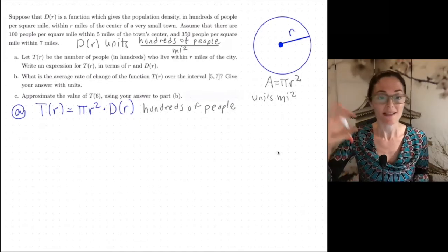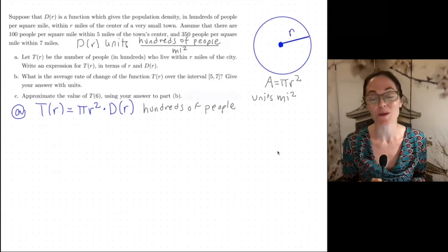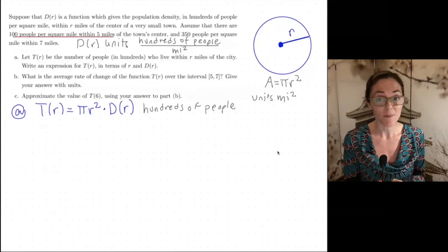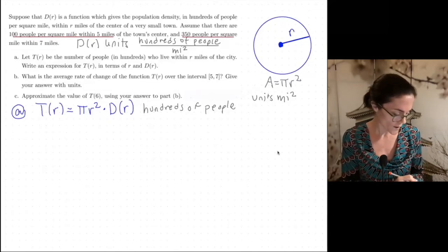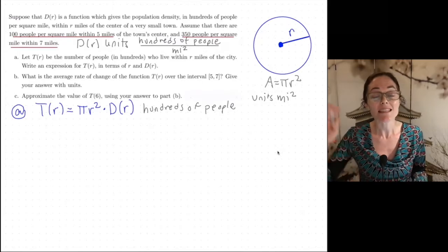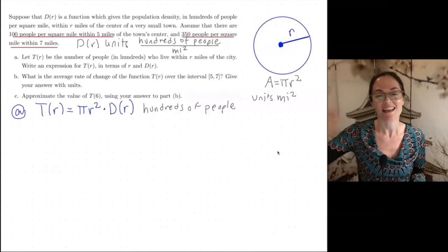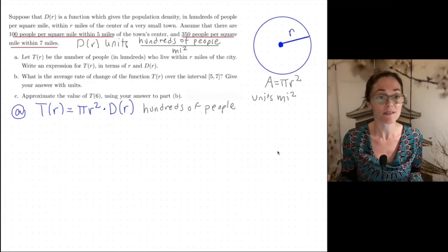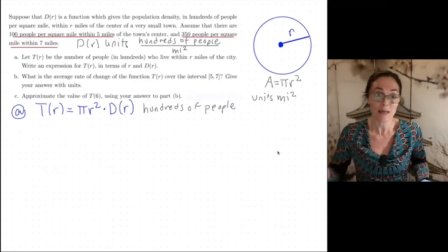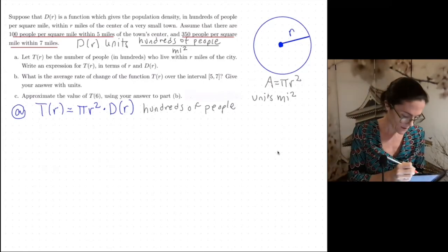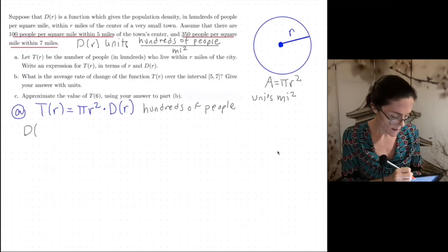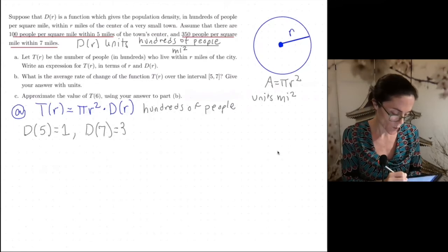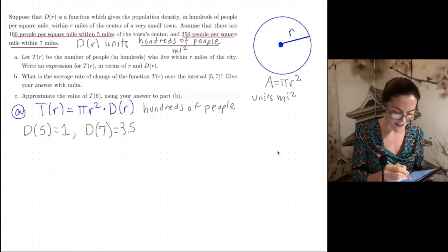Let's finish translating the first part of the paragraph because this will help us as we move into part B. So what we see here, 100 people per square mile within five miles and 350 people per square mile within seven miles. This is telling us D(5) and D(7), but we have to be a little bit careful because D(r) is in hundreds of people per mile squared. And what's underlined in red is just people per mile squared. So what do we know here? We know that D(5) is 1 and D(7) is 3.5. And from this, this will help us as we move into part B.